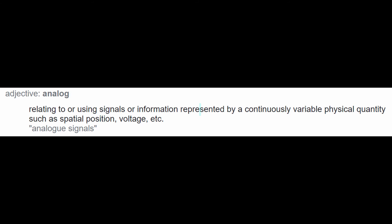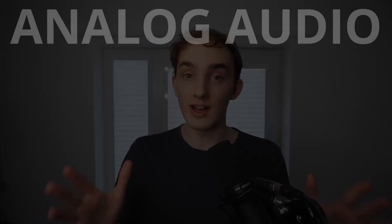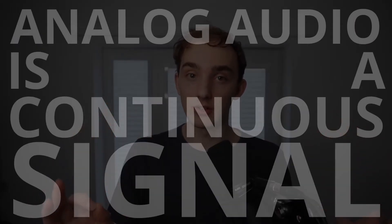Analog audio comes in different forms too. For example, the grooves that are cut into a vinyl, or the pattern of realigned magnetic particles on a tape. Here's the definition of analog: relating to or using signals or information represented by a continuously variable physical quantity such as spatial position, voltage, etc. So analog audio is a continuous signal.